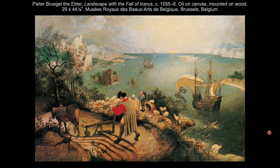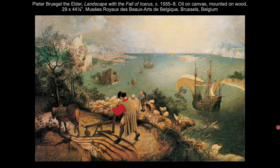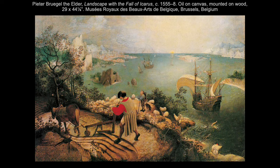The focal point of Bruegel's composition is not Icarus — it is the bright red sleeve of the plowman in the foreground, which draws attention through contrasting colors. The plowman is going about his day totally unaware of Icarus, and to his left we have trees, ships, a sunset, and all these other things to catch our attention. We barely notice Icarus's tiny legs as he falls into the sea, hidden among whitecaps, splashes, and seabirds. Some scholars think Bruegel was illustrating a Flemish proverb: 'No plow stands still because a man dies' — or in simpler terms, life goes on.